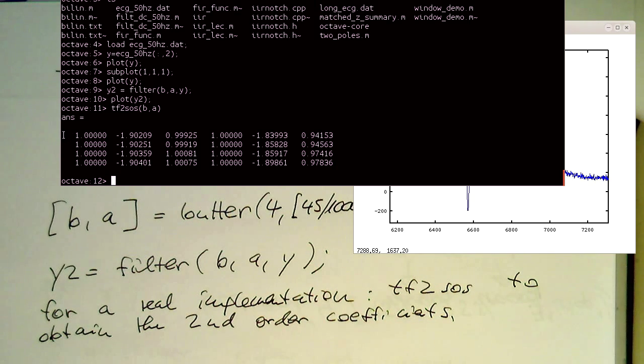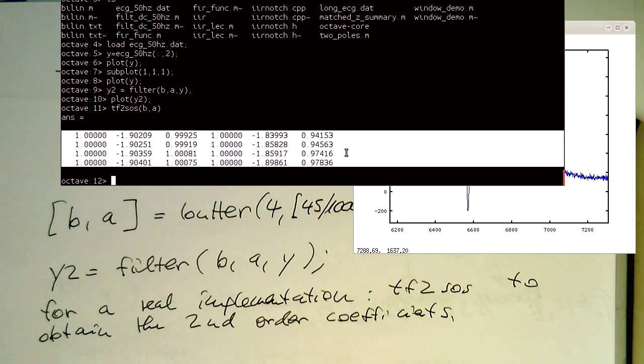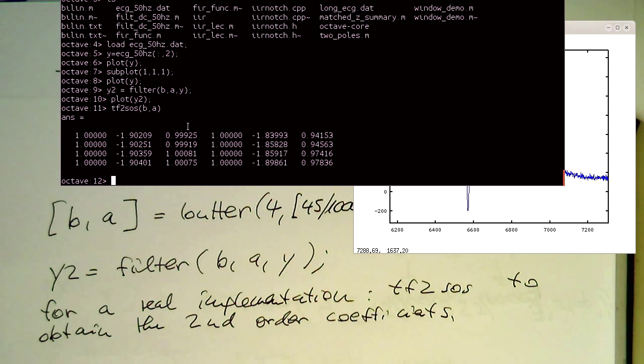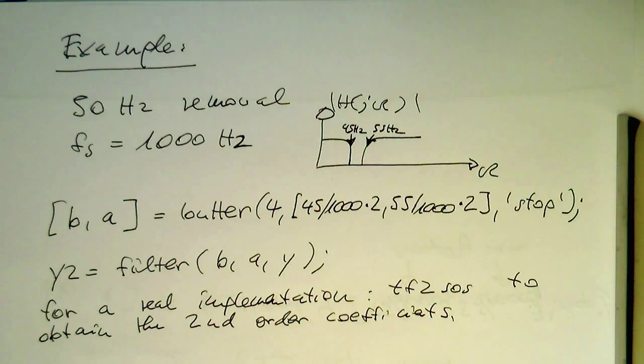So these are our, so we need 4 second order filters to obtain this filtering operation here. So we need a cascade of 4 second order filters. And we can put them basically into our C implementation. And with that, with this example we also have seen now how simple it is using the high level design command by Octave or Matlab to generate quite complex IIR filters.